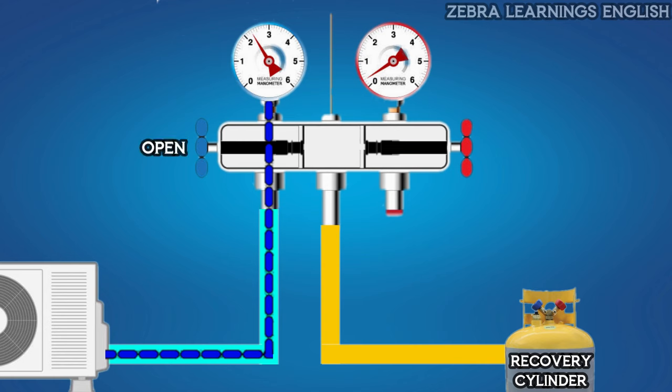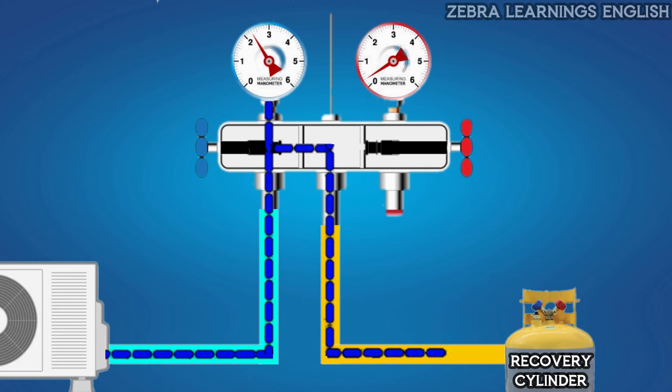Now, when you open the on-off valve, refrigerant will start going to the recovery cylinder through the yellow hose. This is how the refrigerant is discharged from the unit.